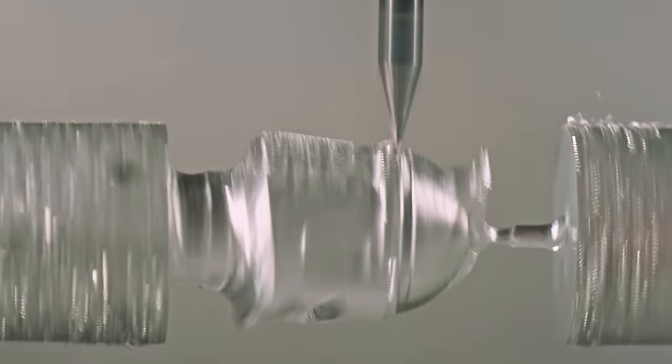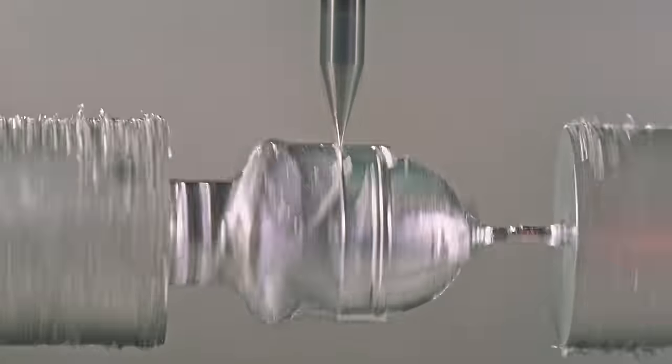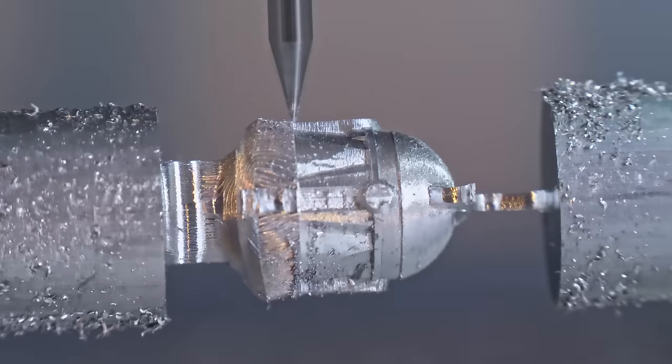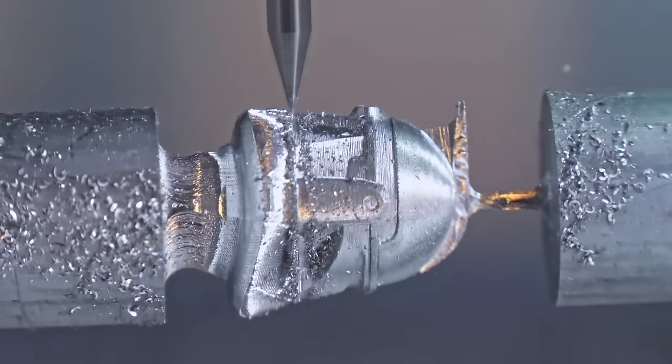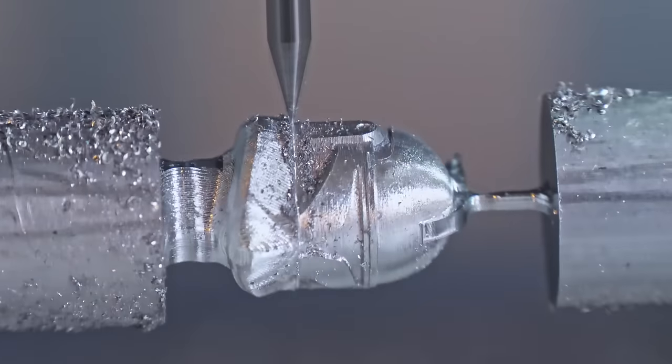I'm not sure if this 30 degree v bit is the best for getting a good finish on aluminum or for this type of part but it definitely let me get a lot of detail. Perhaps a bullnose end mill would have been better.